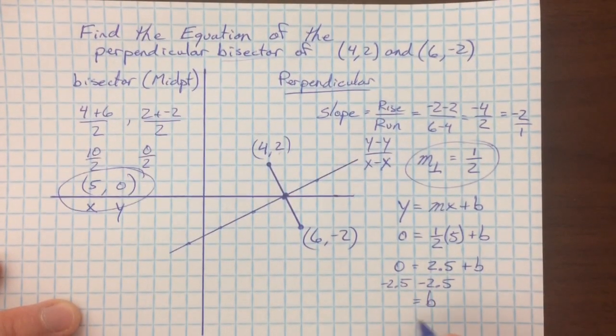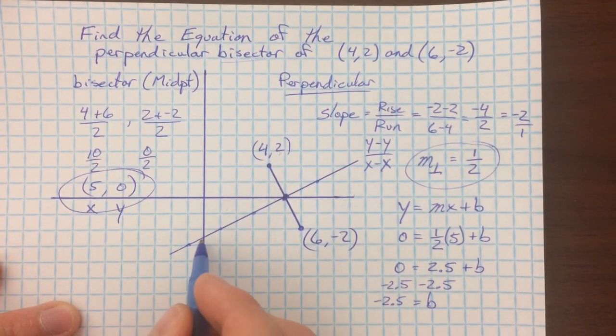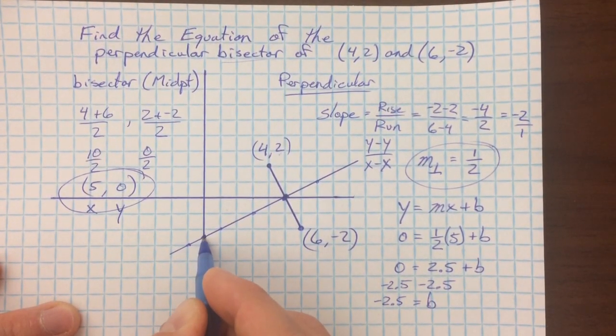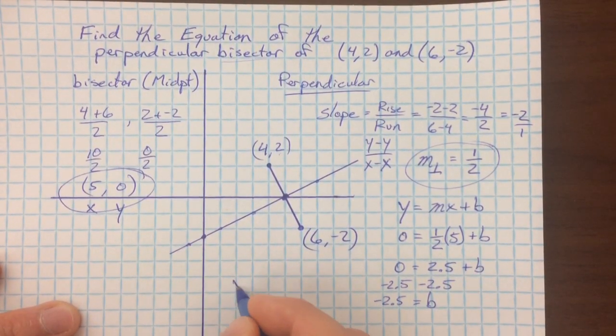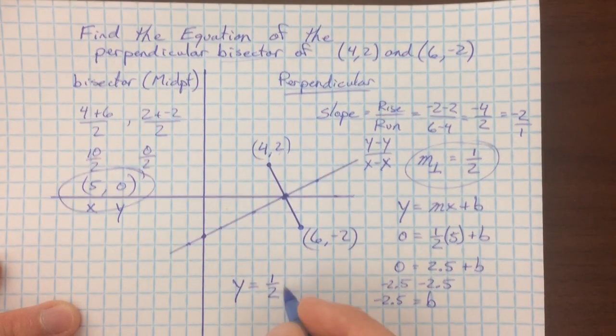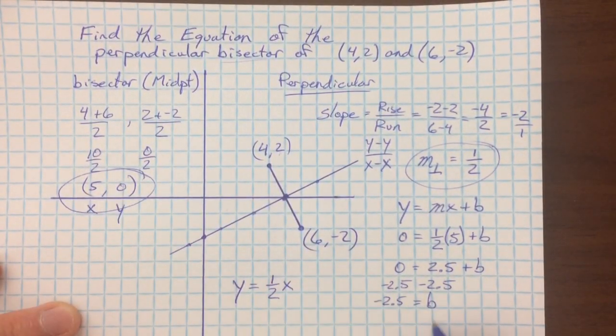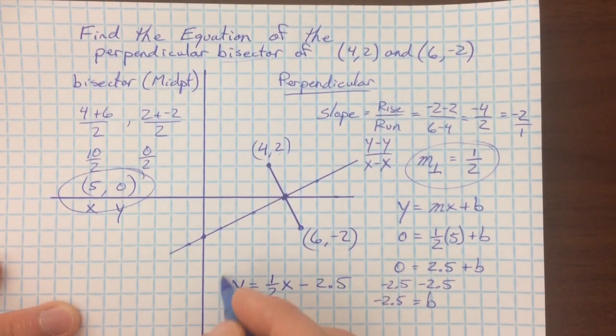If I solve this for b, I get negative 2 and a half. That means my y-intercept is negative 2 and a half. Visually, looks correct. We're down 2 and a half from where we started. So my equation of my perpendicular bisector has my perpendicular slope, goes through this point (5,0), and has negative 2 and a half as my y-intercept.